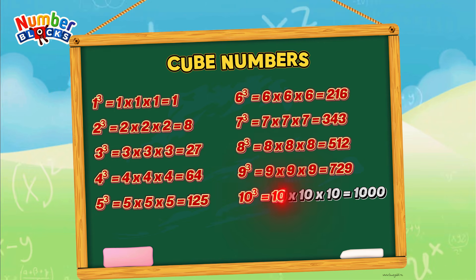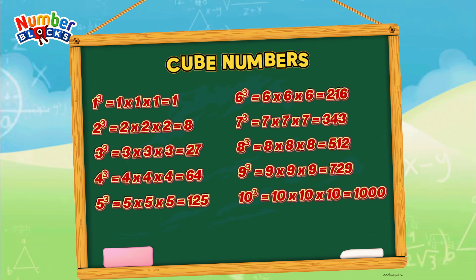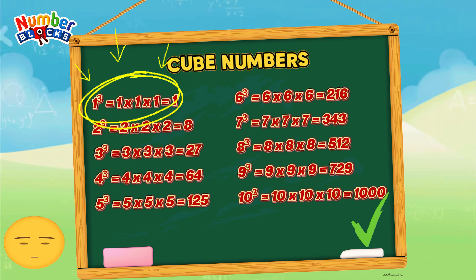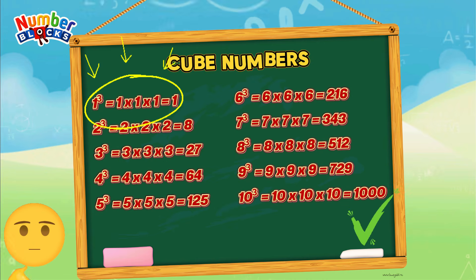10 cube, or 10 times 10 times 10, equals 1,000. Always remember, a cube number is a product of three identical factors.